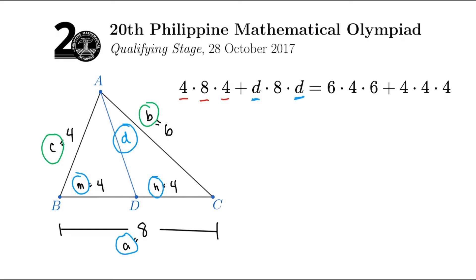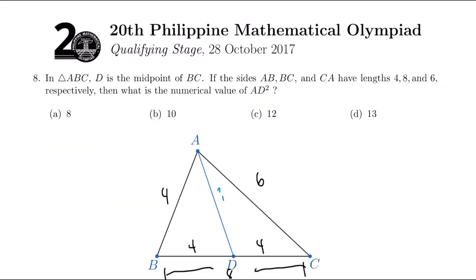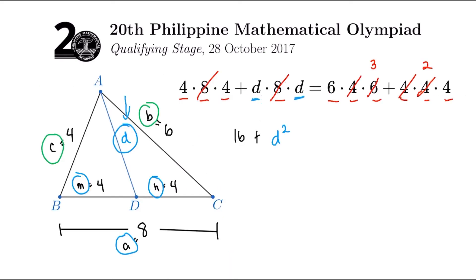Similar to the previous question, we could divide both sides by 8. They have many factors of 8. 4 and the 2 from the 6. We'll borrow from here. And then 4 and the 2 from this 4. So, technically speaking, 4 times 4, so 16, plus D squared. Again, D squared is what we want because the question asks for AD squared, which we let it to be D in this case. So 16 plus D squared equals 6 times 3, that's 18, 2 times 4, that's 8.